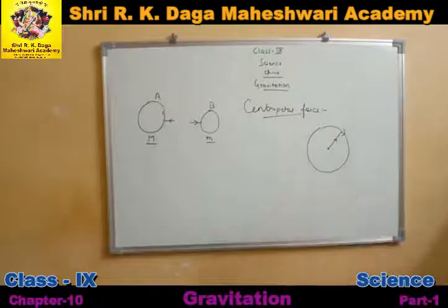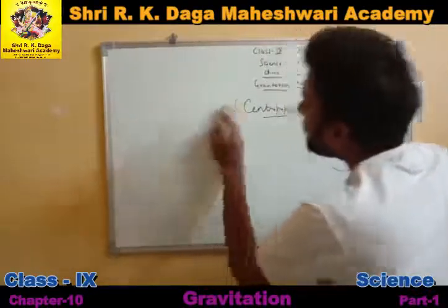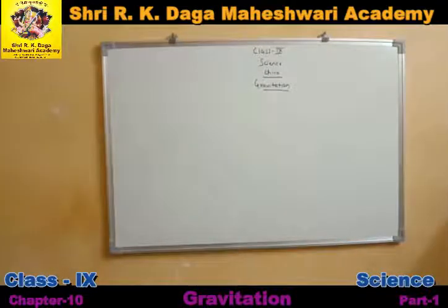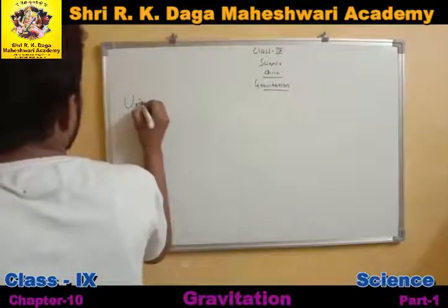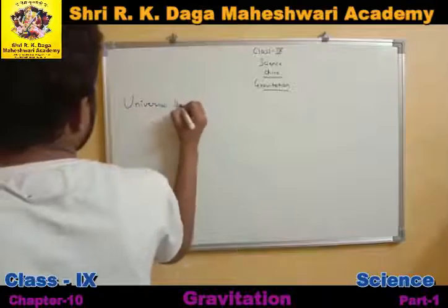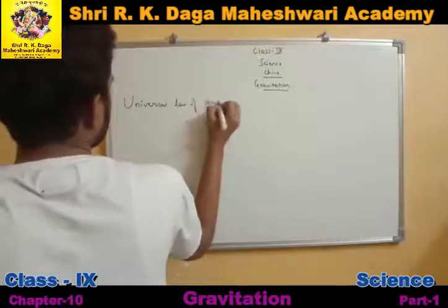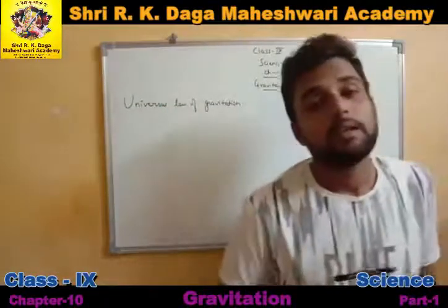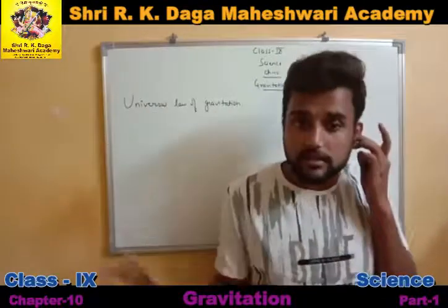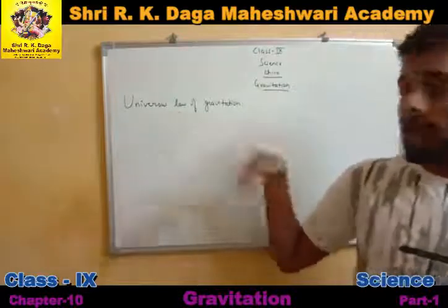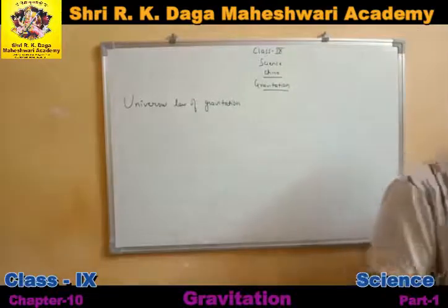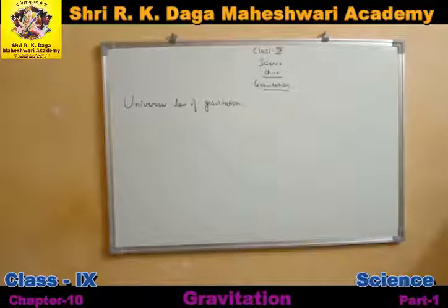To find the value of gravitational force, Newton gave a law called the Universal Law of Gravitation. As the name suggests, this law is applicable to the whole universe — whether we talk about Earth, any planet, or the entire universe. All bodies in the universe follow this law.